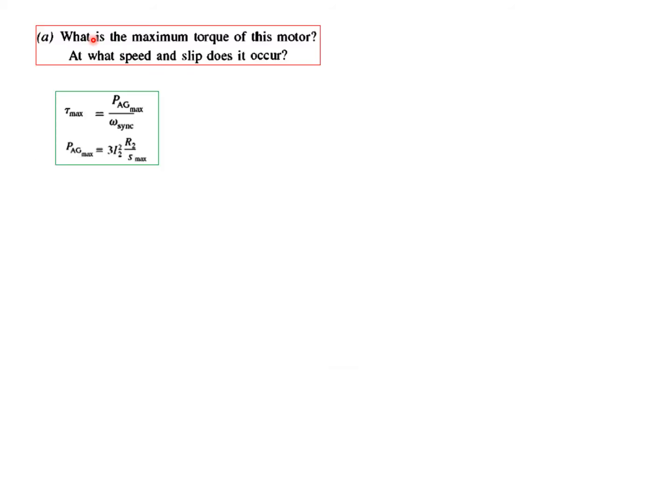The first is what is the maximum torque of this motor and at what speed and slip does it occur? We know the formula for maximum torque. To calculate P_AG we have to calculate current I_2. We will take help of a Thevenin circuit and convert it into Thevenin's form.